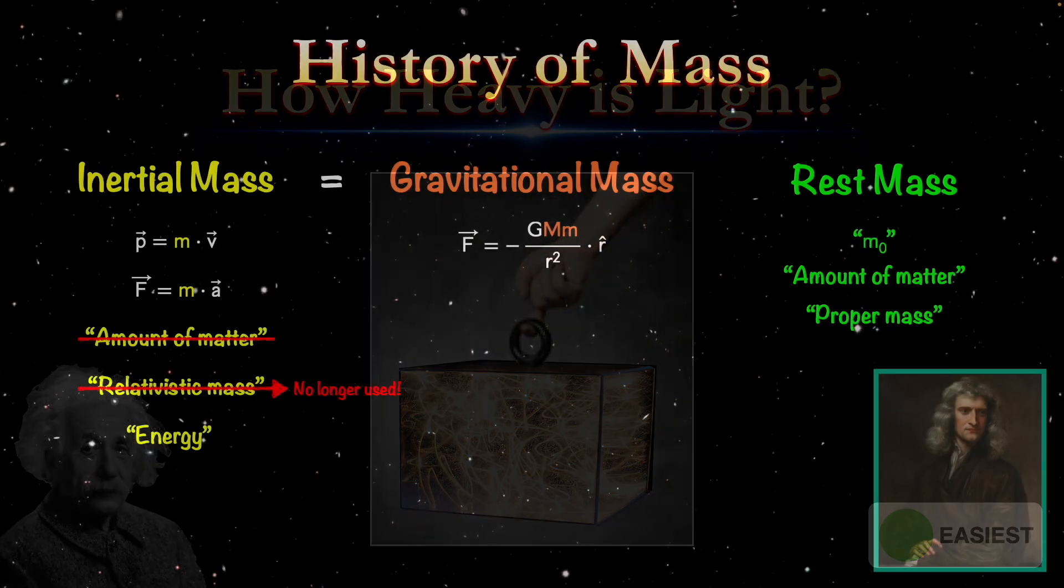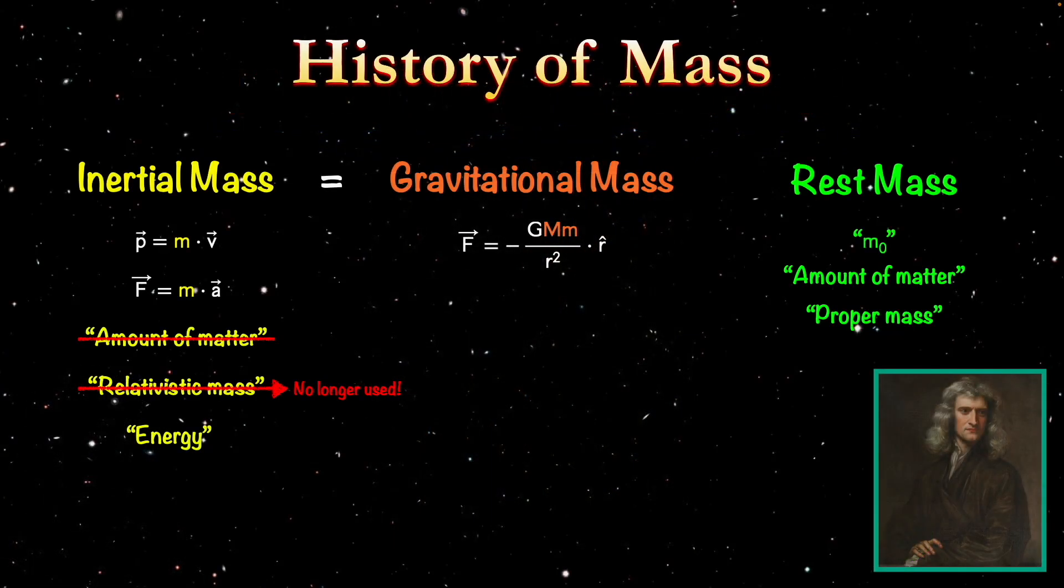In a previous video I asked if light has mass, and I explained that it kind of depends what you mean by mass because the term mass has been used in various ways over the history of physics. In summary, light has no rest mass, which is the mass of an object at rest. Light is in fact never at rest, so it has no rest mass.